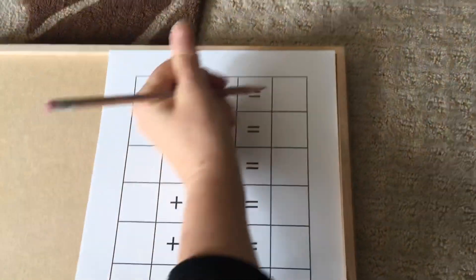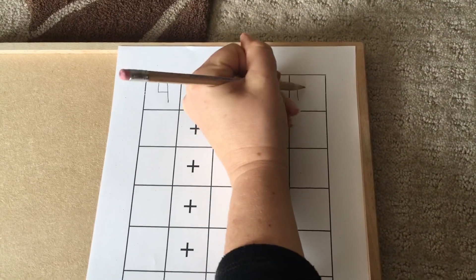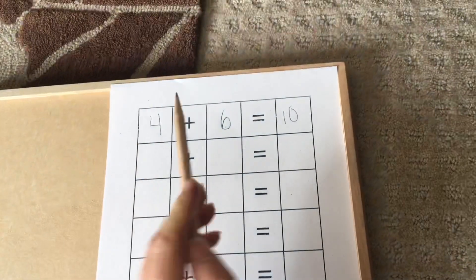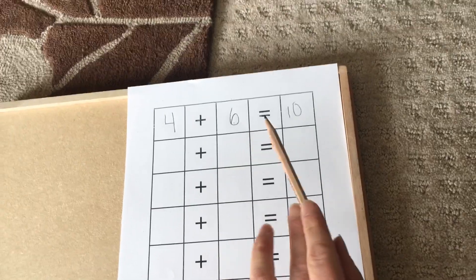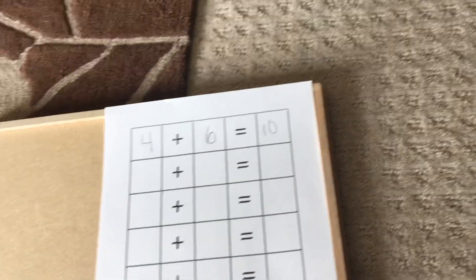And we can go back to our paper, if you've been writing, and go ahead over here and write ten, because we know now that when we had four, and we added six, we counted them all together, it made ten. Okay.